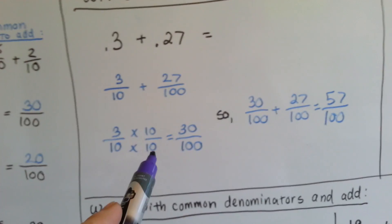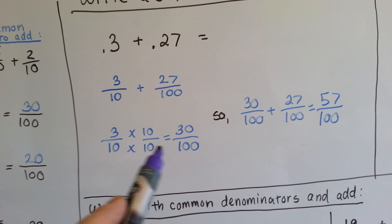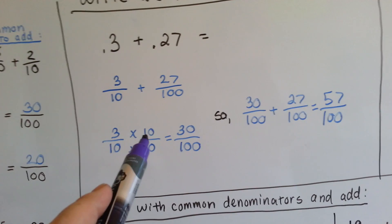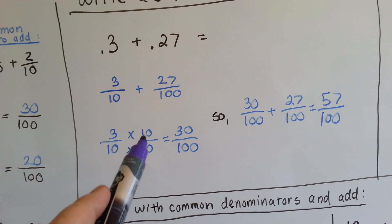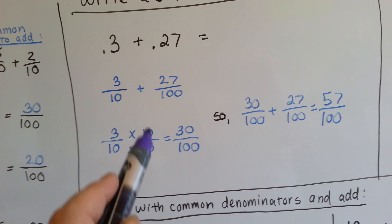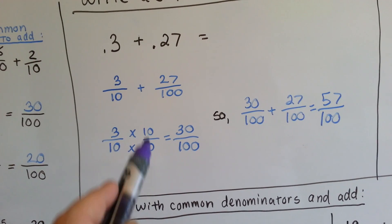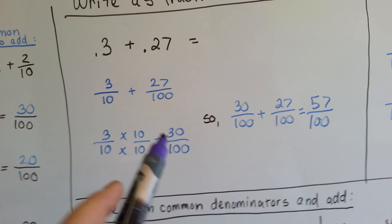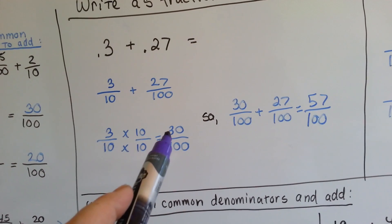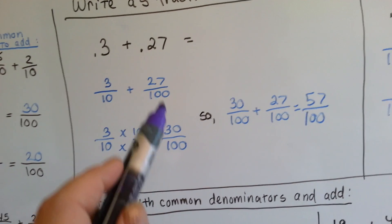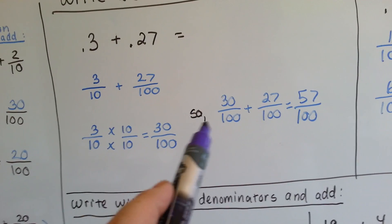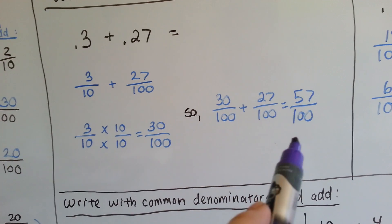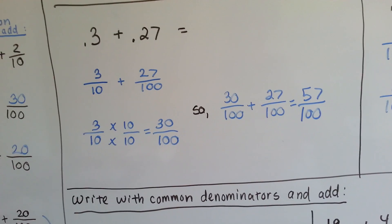We multiply the denominator to become 100. We multiply the numerator by the same amount because it gets jealous — it wants to be multiplied by whatever the denominator is multiplied by — and we have 30 one-hundredths. Now we can add the 30 one-hundredths and the 27 one-hundredths, and we get 57 one-hundredths.